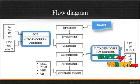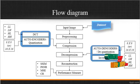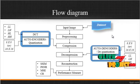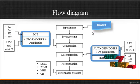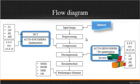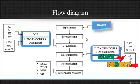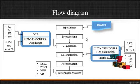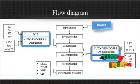Now we are going to discuss about the flow diagram for the process. This is the overall working flow. First, the input image is taken from the dataset. After getting the input image, pre-processing is carried out, where the image is resized to an aspect ratio of 256×256. After pre-processing, the compression is done using two steps.